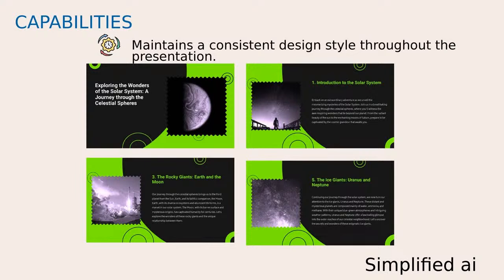Another benefit is that these AI presentation makers maintain a consistent style throughout the presentation. Here's an example from Simplified AI using the solar system topic I tested across tools. You can see four slides — the title page and the rest follow a similar style. The content and images are different, but the style is the same. Just like choosing themes in PowerPoint, these AI tools make it easy to stay consistent.